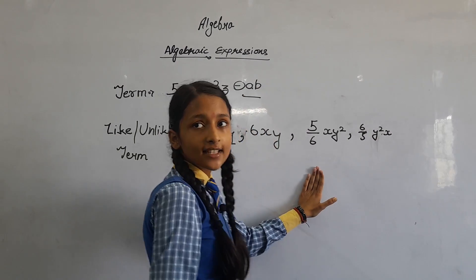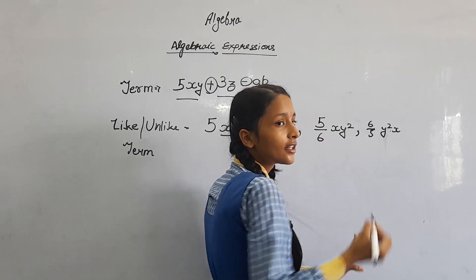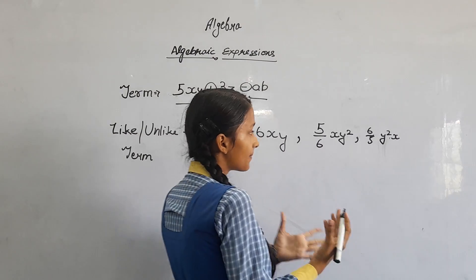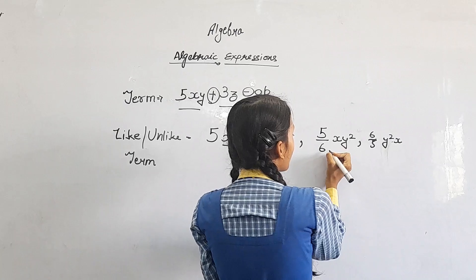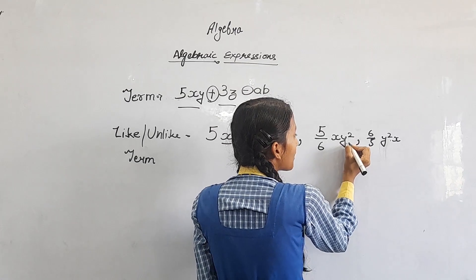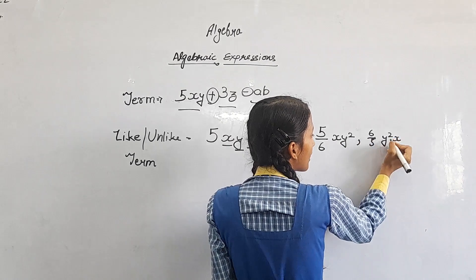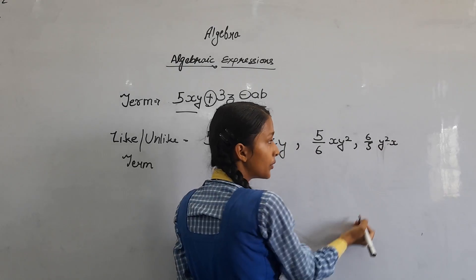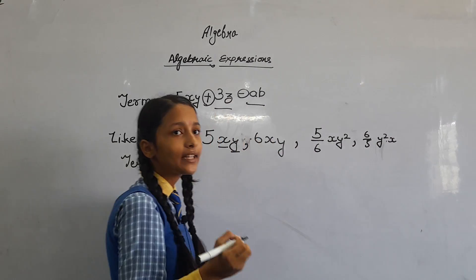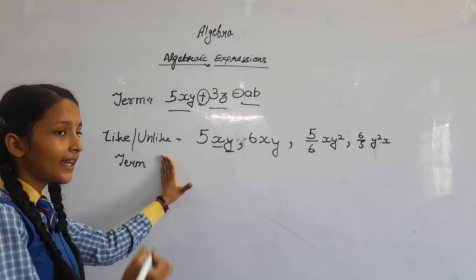In this example, if their place is replaced, there is no problem because the place is replaced. But this is y to the power two, and here is also y to the power two. So it is an example of a like term. And now we will come to unlike term.